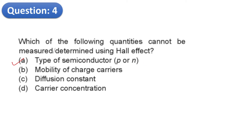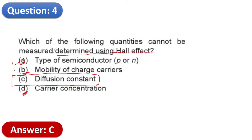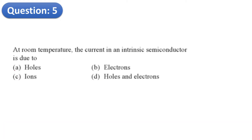Question 4 asks which quantity cannot be determined using the Hall effect. Using the Hall effect we can determine: the type of semiconductor, mobility of charge carriers, and carrier concentration. The quantity that cannot be determined is the diffusion constant. The correct answer is C.